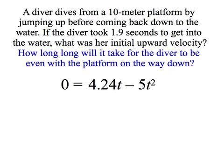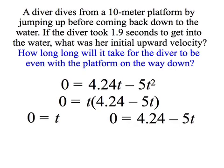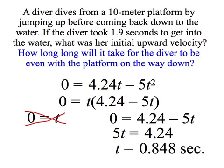Now we'll answer another question. How long will it take for the diver to be even with the platform on the way down? The platform's at 0 meters, so we plug in 0 for d. We still have our initial upward velocity of 4.25. We factor this quadratic equation. And once again, the 0 equals t is the starting point, but we want to know on the way down when is the diver back even with the platform at 0 meters. We add 5t to both sides and divide by 5, and we get that it's about 0.848 seconds or just a little less than a second to get even with the platform on the way down on this 1.9 second dive.